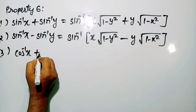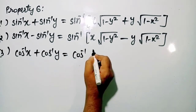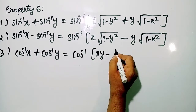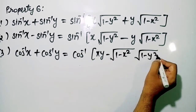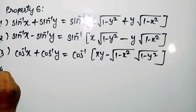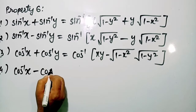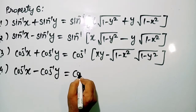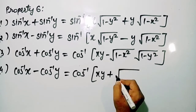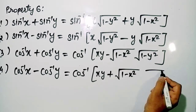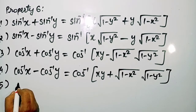Third, cos⁻¹ x + cos⁻¹ y = cos⁻¹(xy − √(1−x²)·√(1−y²)). Fourth, cos⁻¹ x − cos⁻¹ y = cos⁻¹(xy + √(1−x²)·√(1−y²)).